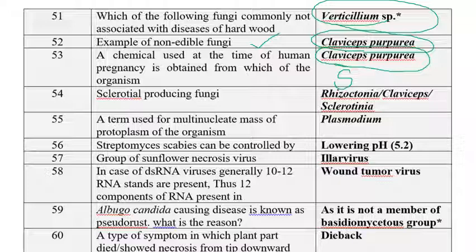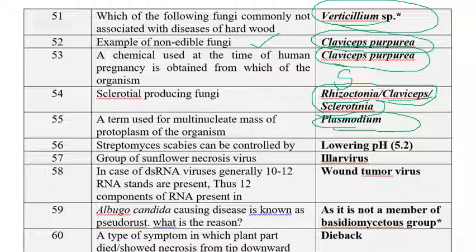Sclerotia-producing fungi include Rhizoctonia, Claviceps, and Sclerotinia — these all produce sclerotia as a resting structure. The term used for a multinucleate mass of protoplasm is known as plasmodium. We can observe this plasmodium in the life cycle of club root of cabbage, that is Plasmodiophora brassicae. The definition: multinucleate mass of protoplasm is called plasmodium.